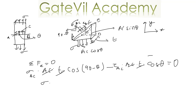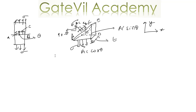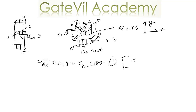After cancelling AC and T, we get: sigma_AC sin theta equals tau_AC cos theta. This is the first equation, which comes from summation Fx equals zero.